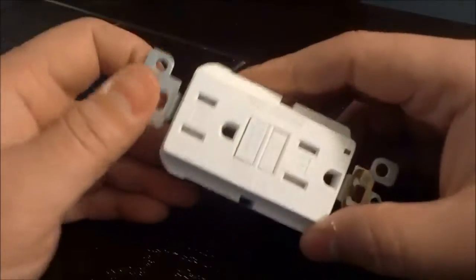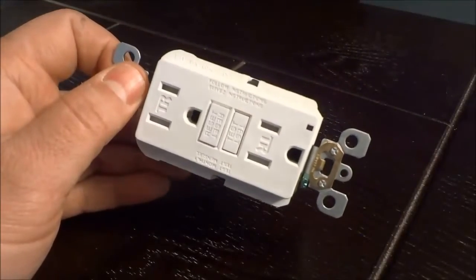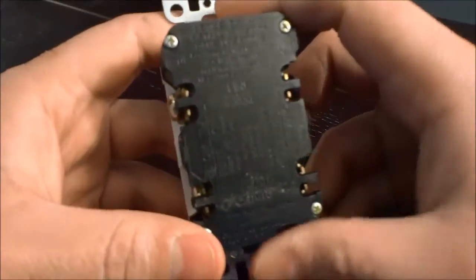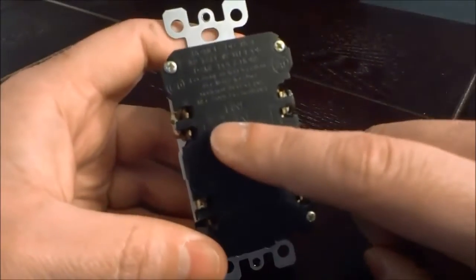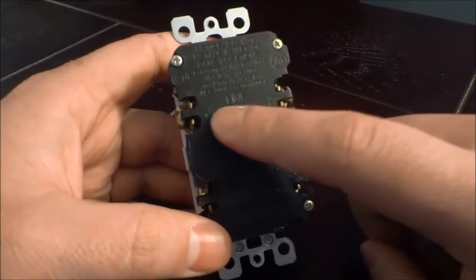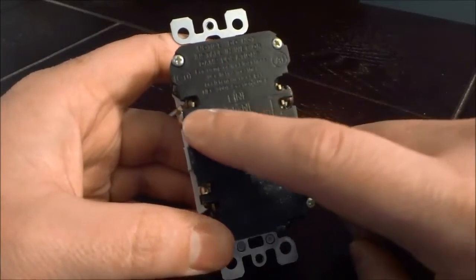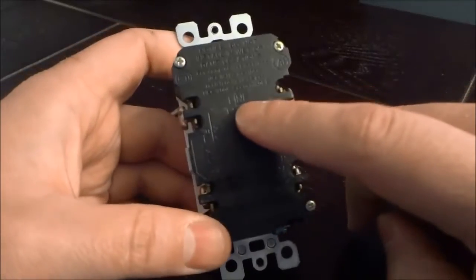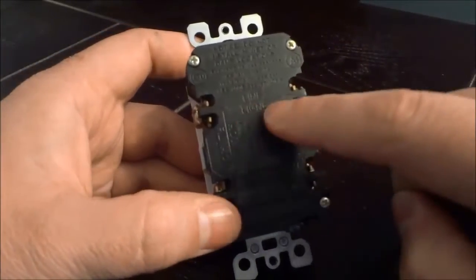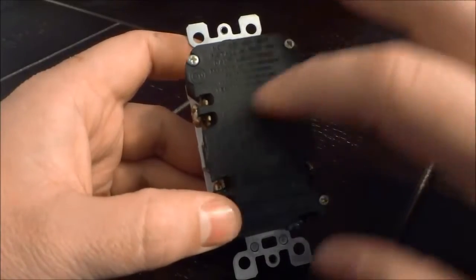As you can see right here, I have a GFCI receptacle and we're going to take a look at the back. Now if you take a look at the back, it says 'line' right here—and I hope that the camera can actually catch this—and it's pointing to the screws on either side of the word. So these two screws here are for the line, and I'll explain what that means in just a moment.